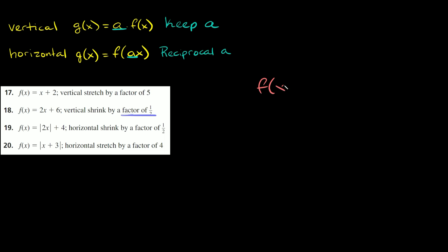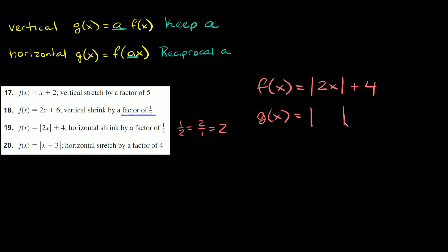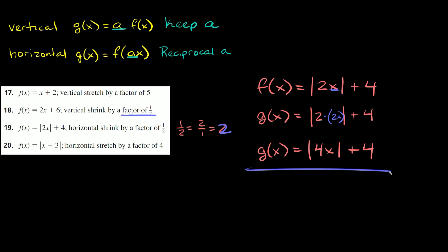Number 19: f of x equals the absolute value of 2x plus four. It says horizontal shrink by a factor of one-half. For horizontal, you take the reciprocal of the factor — the reciprocal of one-half is two. We only multiply the x's by two, not the whole function. So g of x equals the absolute value of 2 times 2x, plus four, which gives the absolute value of 4x plus four.